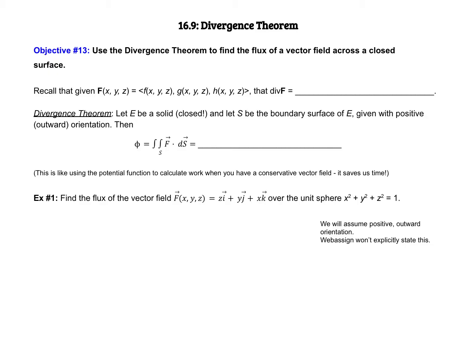This last video covers the divergence theorem. So we are going to return to calculating flux using surface integrals. So let's just jump right in. Recall that given some vector field f that is a function of x, y, z for all three components, the divergence of f is the partial of f with respect to x, add the partial of g with respect to y, add the partial of h with respect to z.